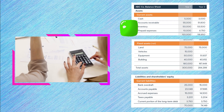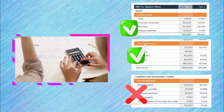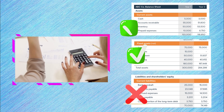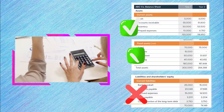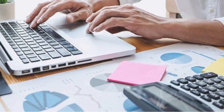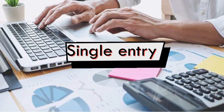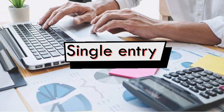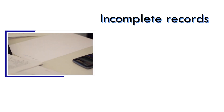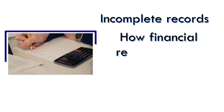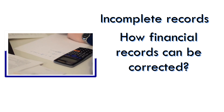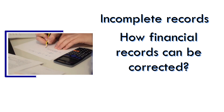The users of financial statements expect faithfully represented financial information that reflects the status or condition of the entity and is relevant for decision-making. Unconventional accounting systems such as a single-entry system may not achieve this. In this video, you'll learn about incomplete records and how financial records can be corrected to obtain more robust financial information.